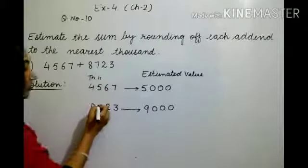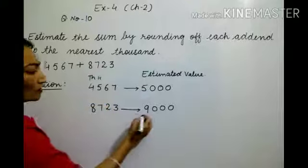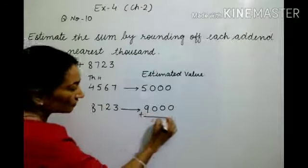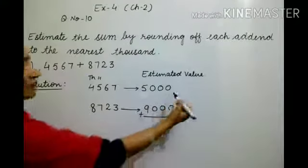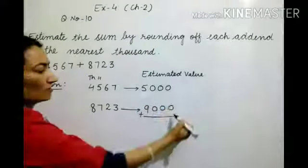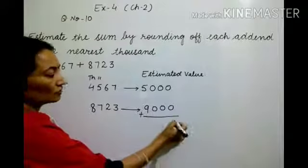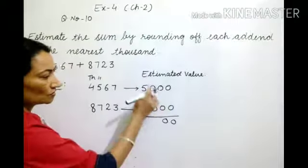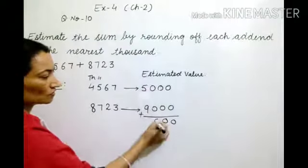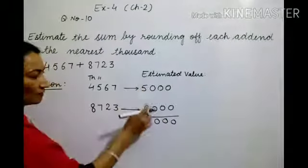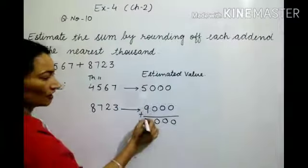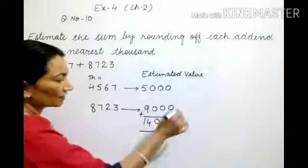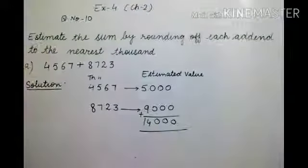Now add the rounded values. Zero plus zero is zero, zero plus zero is zero, zero plus zero is zero, and five plus nine is fourteen. So the estimated sum is 14,000.